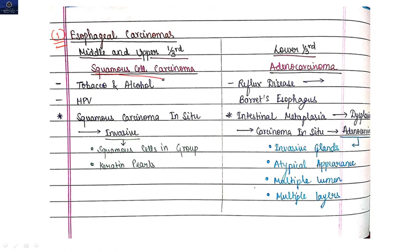Squamous carcinoma basically involves middle and upper one-third of the esophagus, whereas adenocarcinoma involves lower one-third, means distal. You can remember ADD for distal, so it involves the distal portion of the esophagus. The risk factor for squamous carcinoma is tobacco and alcohol along with HPV infection. For adenocarcinoma, the risk factor is reflux disease, that is Barrett's esophagus.